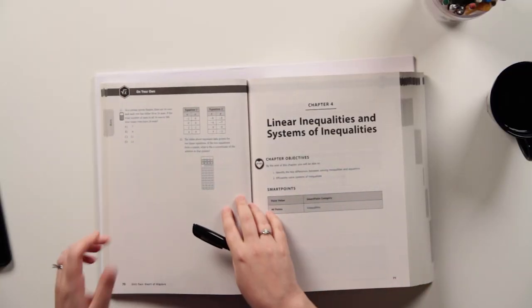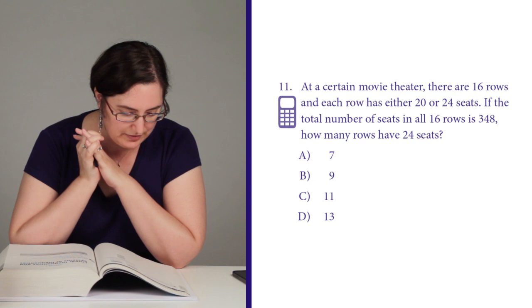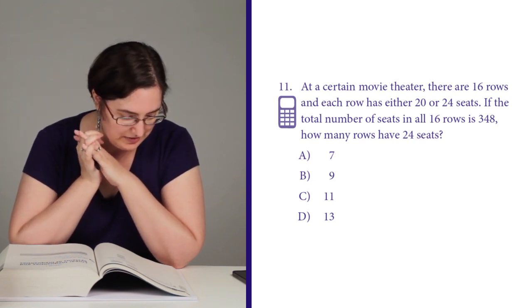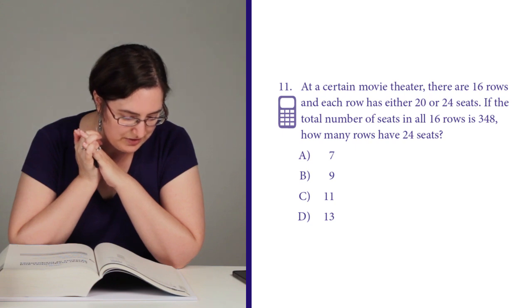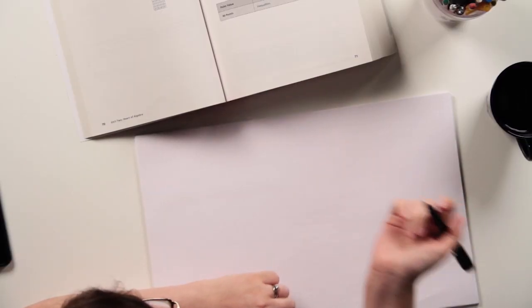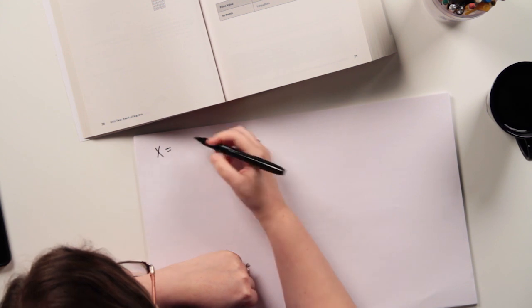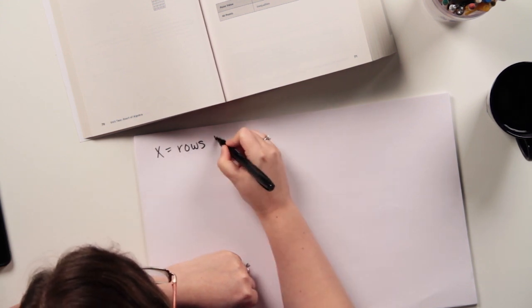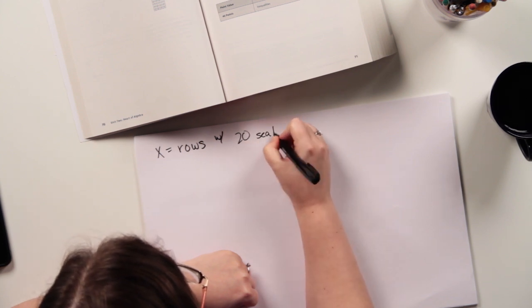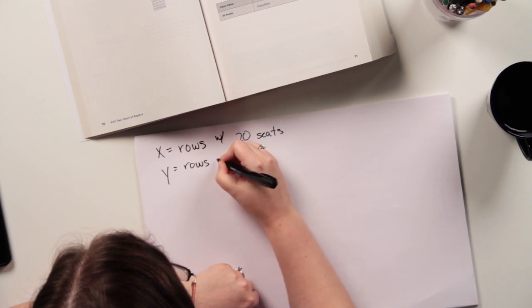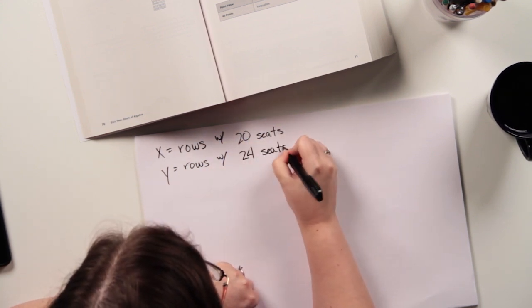Alright, let's do another one. Page 70, question number 11. At a certain movie theater, there are 16 rows and each row has either 20 or 24 seats. If the total number of seats in all 16 rows is 348, how many rows have 24 seats? Alright, gotta love system of equation word problems. If x equals rows with 20 seats and y equals rows with 24 seats, then I've got two equations here.